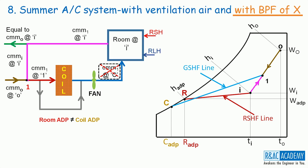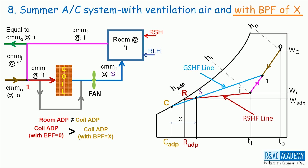Because of this, the GSHF line intersects the saturation curve at a different point, and that is the coil ADP for this case. To summarize the discussion so far: for the summer air conditioning system with ventilation air, the coil ADP with bypass factor equal to 0 will be greater than the coil ADP with bypass factor equal to x. Using the bypass factor value supplied by the coil manufacturer, we can determine the state of the air at coil exit, which is the state of the air supplied into the room.